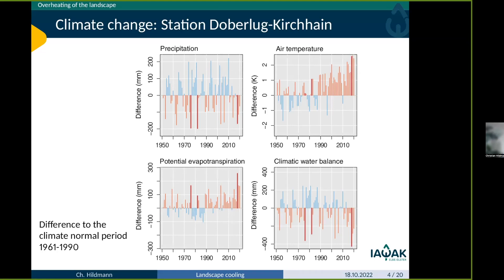The climate projections rather assume a slight increase in precipitation with some shift into the winter months. However, when we look at air temperature, there is a clear trend in recent years — more than 1.5 degrees of warming. If 1.5 degrees is the target, then we have long since exceeded it.